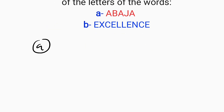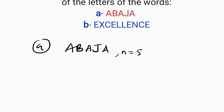Let's start with the first one, ABAJA. Question A: we want to find the different ways of arranging the letters of the word ABAJA. ABAJA is a five-letter word. Remember that we have n factorial different ways of arranging n objects. Therefore, since we have n equal to five, we have n factorial ways of arranging ABAJA. But there is a problem because we have three identical letters.